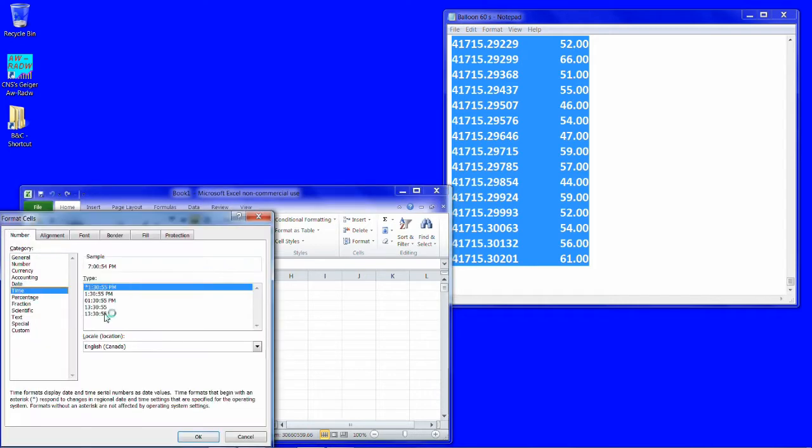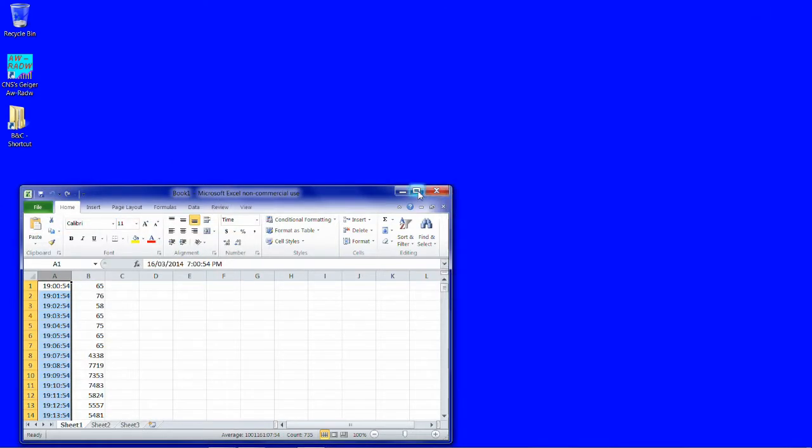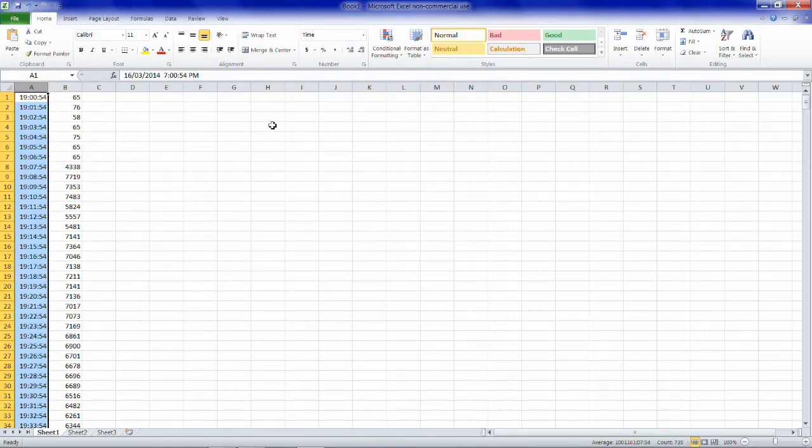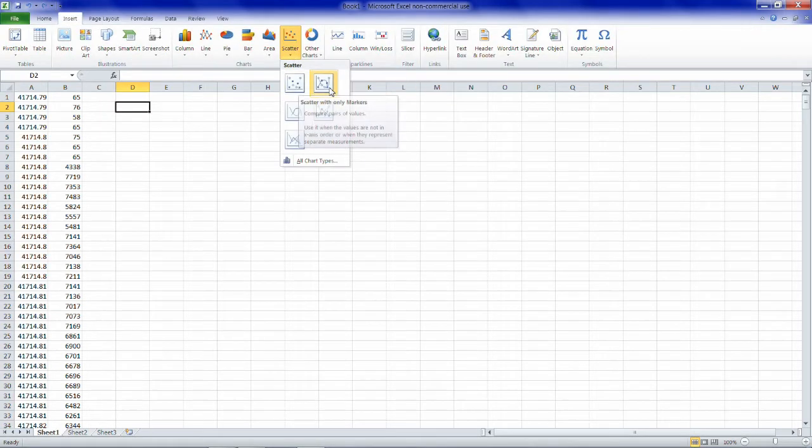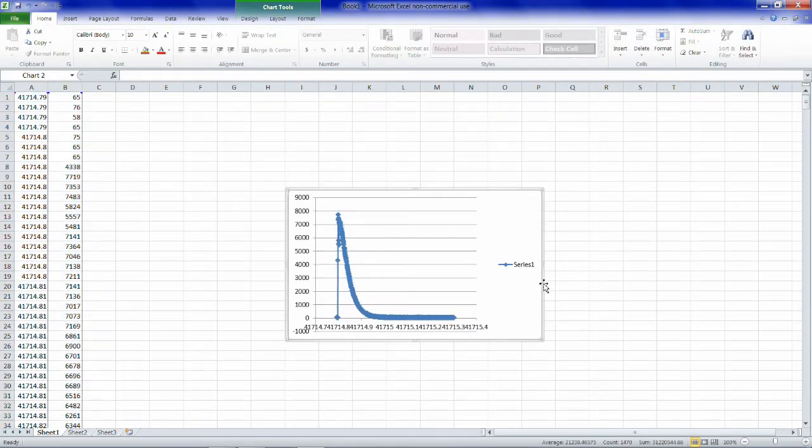We format the first column as time of day. We insert a scatterplot, an XY plot, for the data. We stretch the graph to fill the screen.